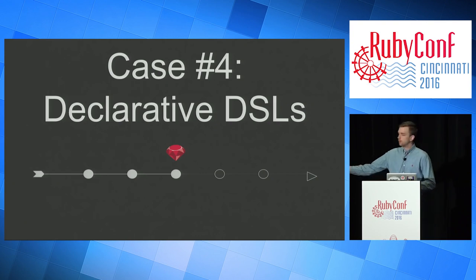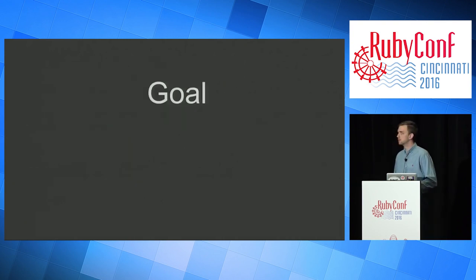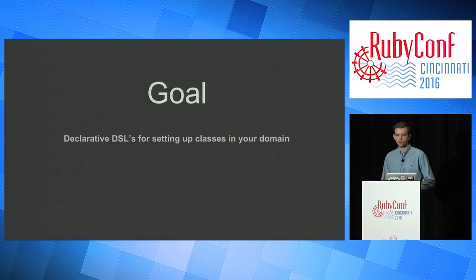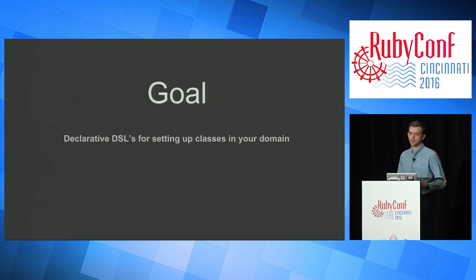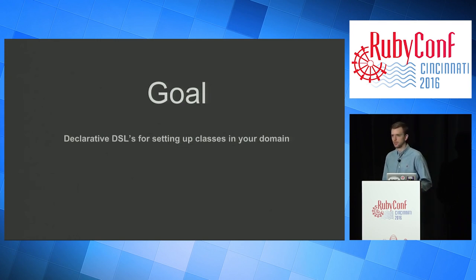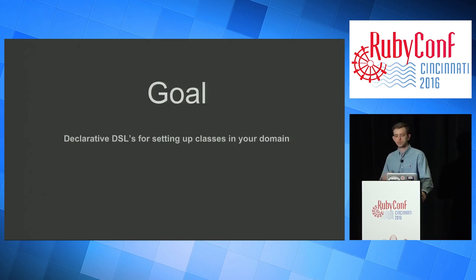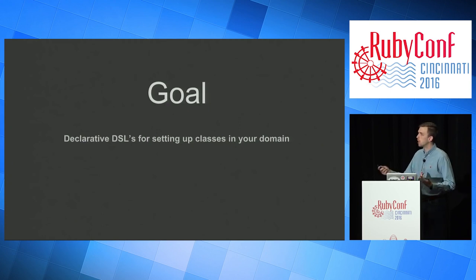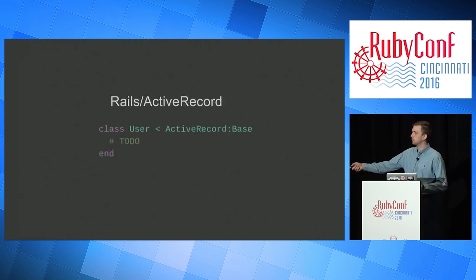Case number four: declarative DSLs. Our goal is declarative DSLs for setting up classes in your domain. It's going to look like normal Ruby, and it should — we use these every day. It's called attr accessor, attr reader, attr writer. It feels like it's part of the Ruby language, but it's not. It's just a method that fits so well within the domain of the problem you're trying to solve. We also want to automate some sort of common functionality for class setup.